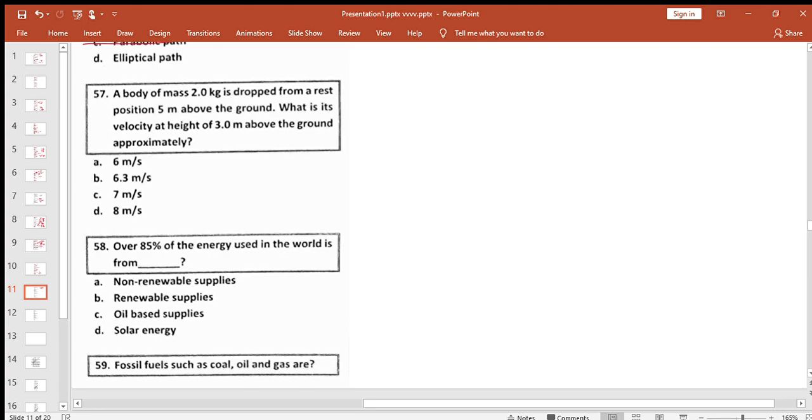A body of mass 2.0 kg is dropped from rest 5 meters above the ground. What is its velocity at height of 3 meters above the ground approximately? The formula is v equals square root of 2gh. H was initially 5. At 3 meters above ground, we calculate for 5 minus 3 equals 2 meters fallen. So we have 2 times 10 times 2 equals 40, and square root of 40 is approximately 6.3 meters per second.